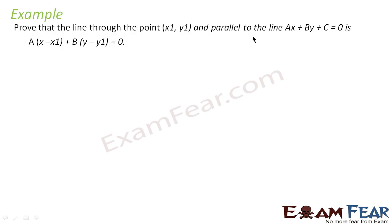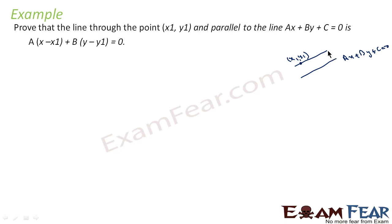We have to prove that there is a line AX plus BY plus C is equal to 0. This is line L1. There is a line which is parallel to this line and it passes through point X1, Y1 — this is line L2. We have to prove that the equation of line L2 is A(X minus X1) plus B(Y minus Y1) equals 0. Now since both the lines are parallel, let's first find the slope of line L2.